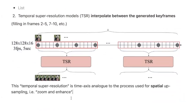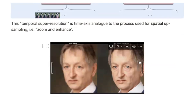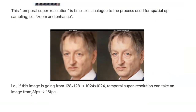This temporal super resolution approach is basically an equivalent in time to the classic zoom-and-enhance on imagery — upsampling spatially versus upsampling temporally. Instead of going from 128x128 to 1024x1024 in spatial resolution, temporal super resolution takes video from 3 frames per second up to 16 frames per second. And yes, these models are trained by taking real high-frame-rate videos, dropping out frames, and then predicting the missing ones — with a ground truth available for training.